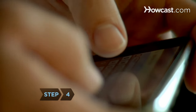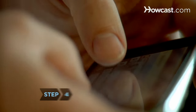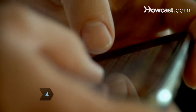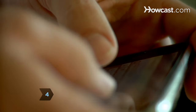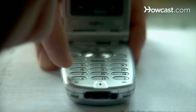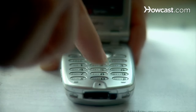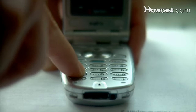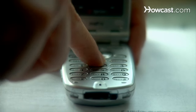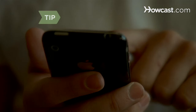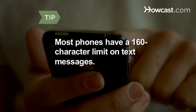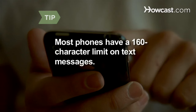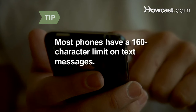Step 4. Type your message. Use your full alphabet keypad if you have one, or use your number keypad, for which you need to press a key once to get the first letter, twice for the second, and three times for the third. Check your text capabilities — most phones have a 160-character limit on text messages.